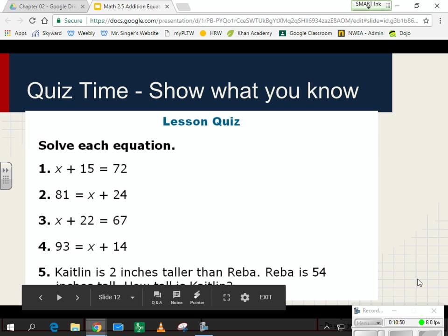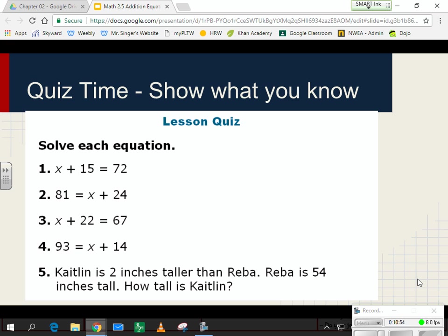And here's your quiz. You have 5 questions. 4 are just simply using inverse operation to solve for x, x, x, and x. And then number 5, you're going to figure out how tall is Caitlin if you know that Caitlin is 2 inches taller than Rebecca, or Reba. And Reba is 54 inches. Good luck.